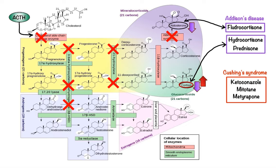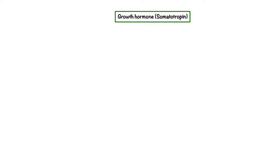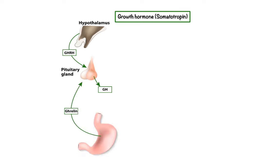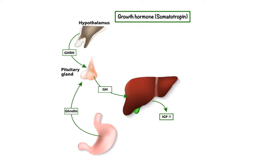Now let's discuss the pharmacology of growth hormone, also called somatotropin. Growth is a complex process requiring coordinated action of several hormones, with growth hormone being the most important. The pituitary secretes growth hormone in response to hypothalamic growth hormone-releasing hormone and the stomach releasing ghrelin. The major role of growth hormone in stimulating body growth is to stimulate the liver and other tissues to secrete insulin-like growth factor 1, IGF-1, which in turn stimulates proliferation of cartilage cells resulting in bone growth, as well as formation of new proteins in skeletal muscle cells resulting in muscle growth.